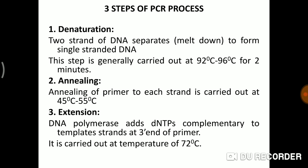In denaturation, for example, if we have a desired segment that is double-stranded, we need to denature it by using temperature for a specific time. In annealing, the separated strands — from a double-stranded DNA that we have denatured into two separate strands — we then attach primers. After that, extension is carried out. So the first step: the two strands of double-stranded DNA separate and melt down to form single-stranded DNA. This is also called the melting temperature.